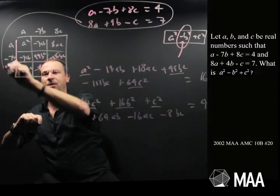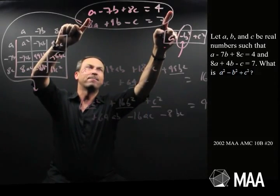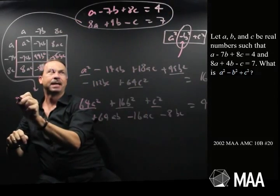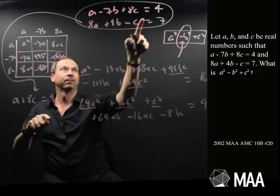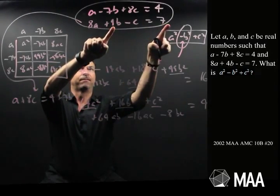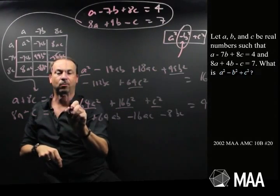In fact, okay, okay, no idea. Again, this might be another false lead, but if I put the b's away from the a and the c's, so I wrote, say, a plus 8c equals 4 plus 7b for the first one, and take 4b on that side, 8a minus c equals 7 minus 4b.